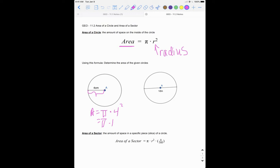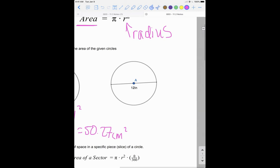When we plug that in, we get 50.27. Make sure we put our unit, so we've got centimeters squared. That's pretty basic when we have the radius given to us.